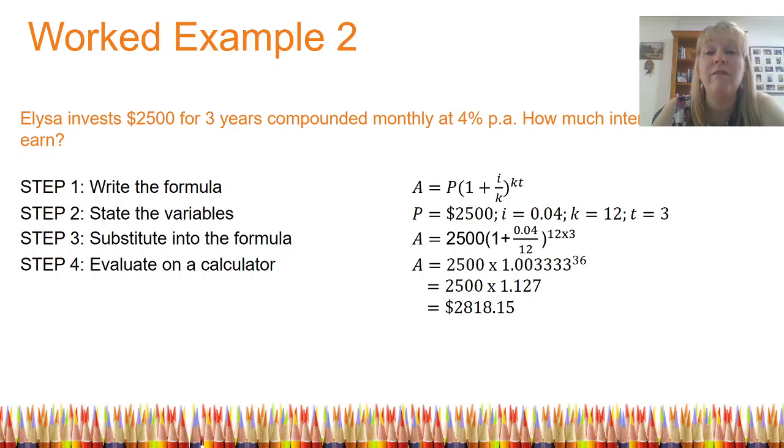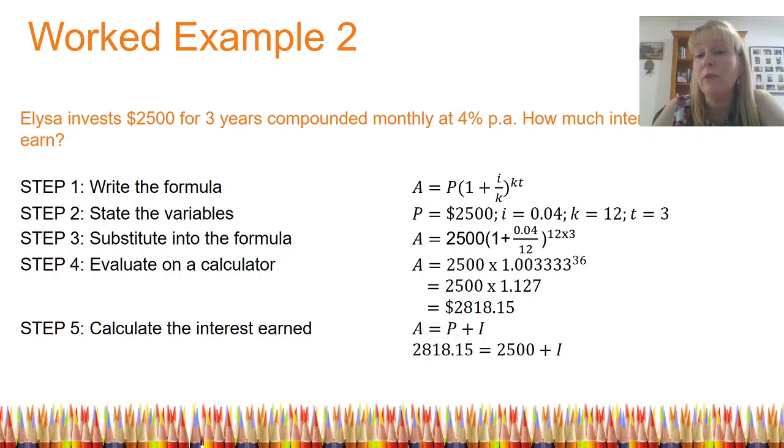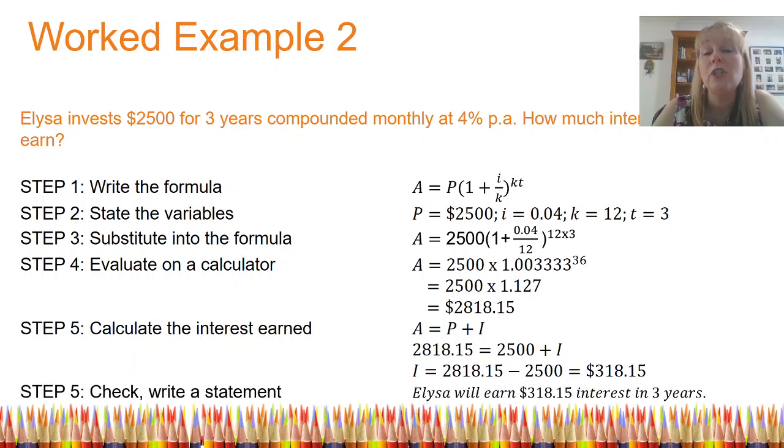However, I'm not quite finished. I found the amount at the end. But the question asks me to find how much interest she earns. Now, if you remember, the formula for interest is A equals P plus I. That gives me the amount at the end is equal to the principal plus whatever interest is earned. So I can substitute in what I know, which is A and P. $2,818.15 equals $2,500 plus I, which is our unknown. If I rearrange the formula, I'm going to find that I is equal to $318.15.